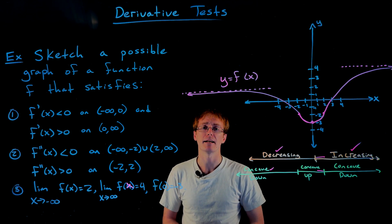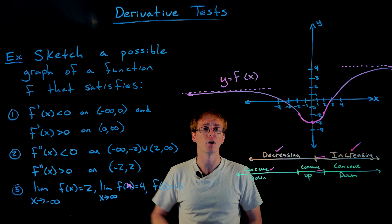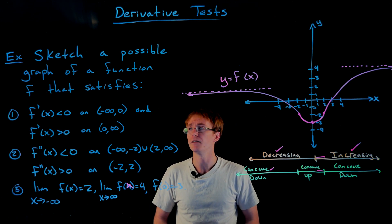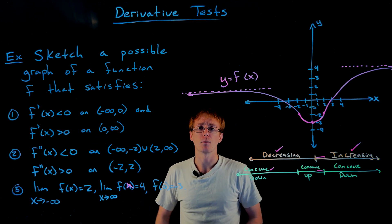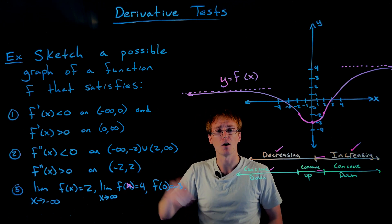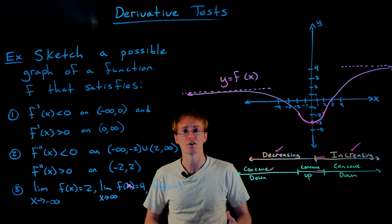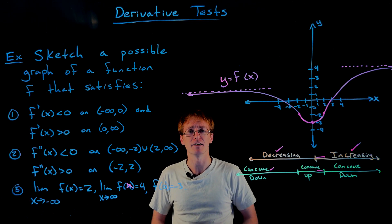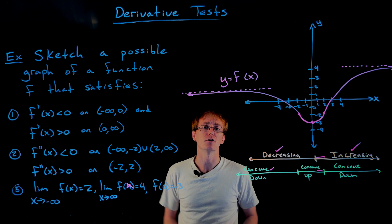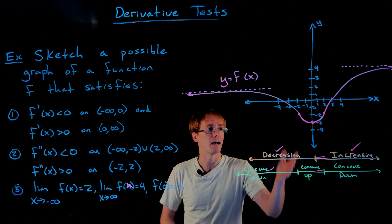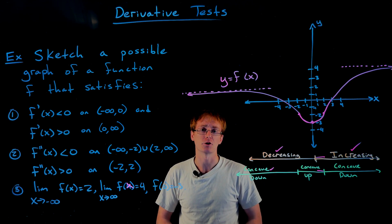Other examples might require us to do algebra first — solving equations or inequalities to find where the first and second derivatives are positive and negative, and evaluating limits as x approaches positive or negative infinity to find end behavior. Once we've collected all that information, it turns into a problem just like this one, where we put that information together to sketch the actual function.